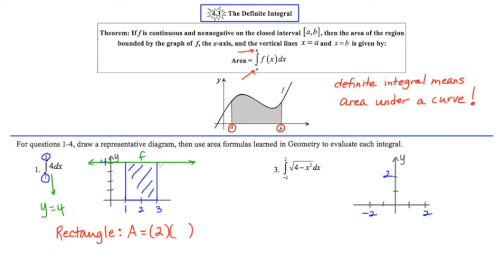The base of this rectangle spans from one to three, so its base length is two. And then of course the height of this whole rectangle is four for an overall area of eight. So this definite integral represents the area under the curve y equals four starting at one and ending at three and its area is eight.